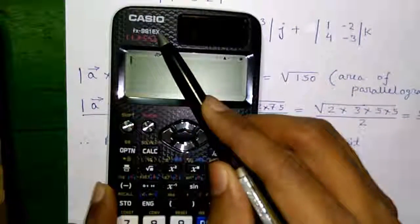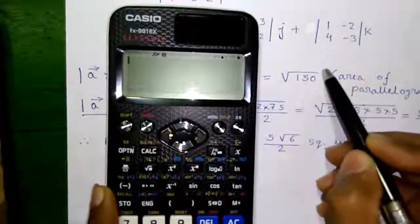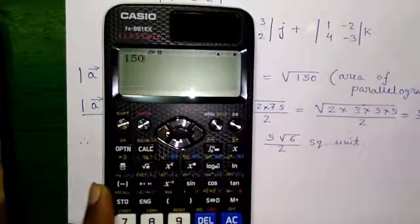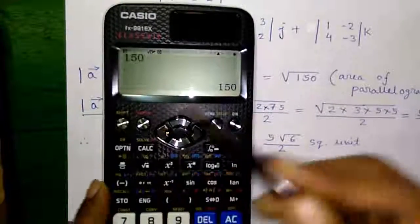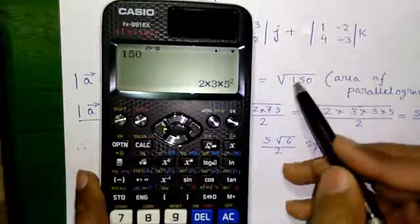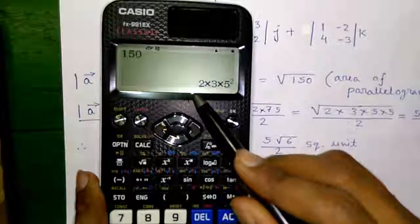Now if you have this calculator, FX-910ES class which you can also factor this value to get in the factor form. For that type in the value 150, press equals to then press shift and this button to factor it. So factor of 150 is 2 into 3 into 5 square, 5 square, it will go out.